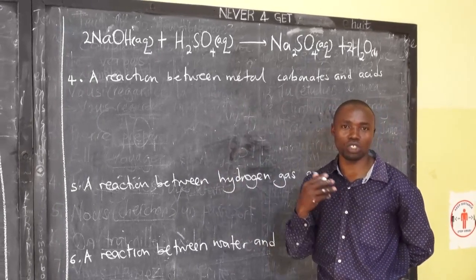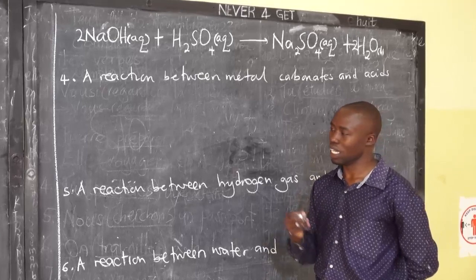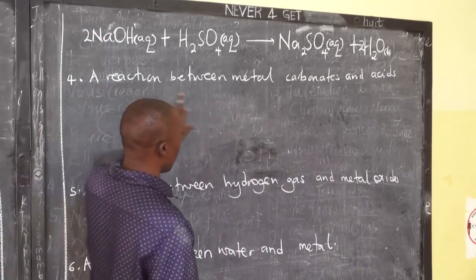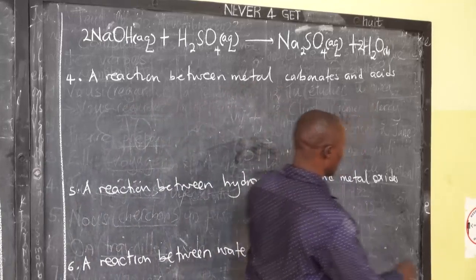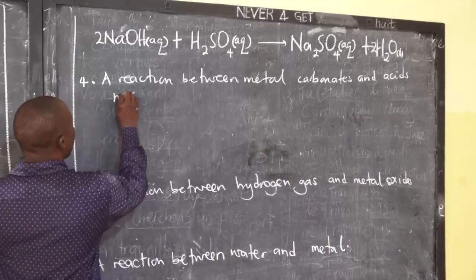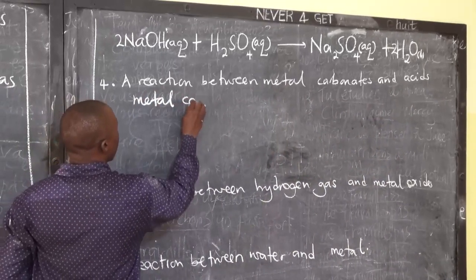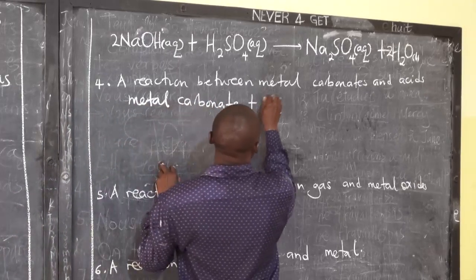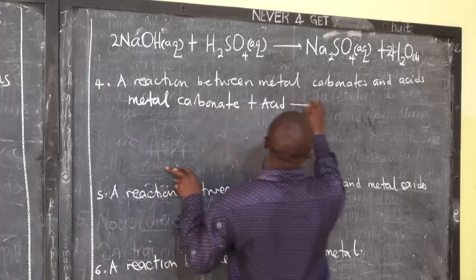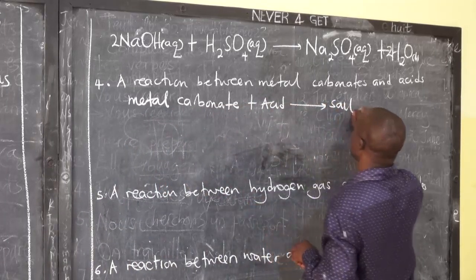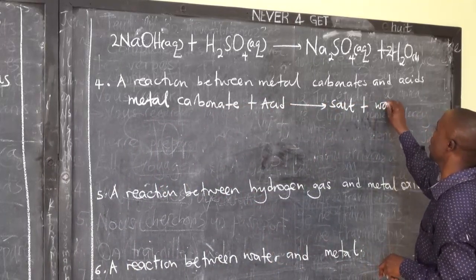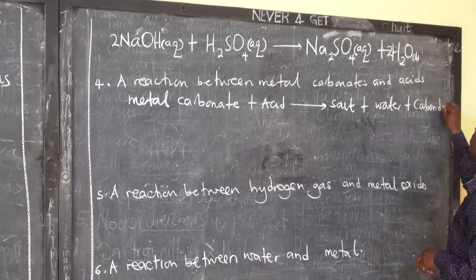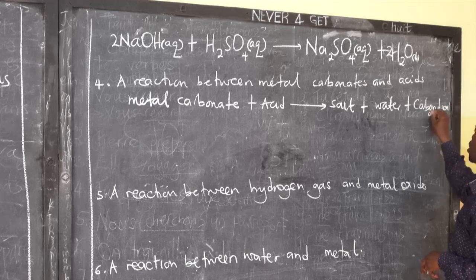I request you to watch this video to the end. Next we have a metal carbonate plus an acid. An equation is simply a small simple formula. Metal carbonate plus an acid — we receive three things: salt plus water, plus a gas called carbon dioxide.